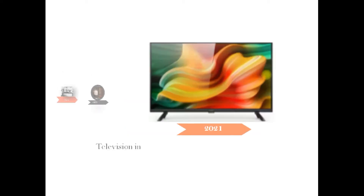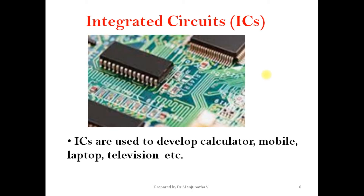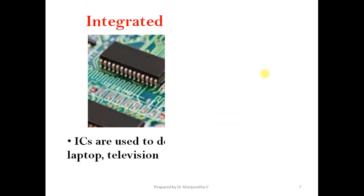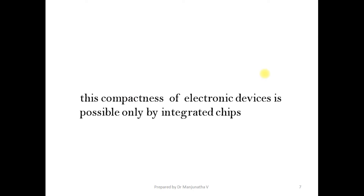In the modern television, the circuits are made of integrated chips. Resistors, capacitors, transistors and diodes were replaced by integrated chips. Due to these integrated chips, electronic gadgets became very thin and compact. These ICs are used to develop calculators, mobiles, laptops, televisions, and more. We can now see very thin laptops and compact mobile and electronic gadgets — this compactness is possible only because of integrated chips.